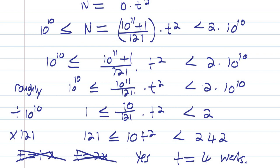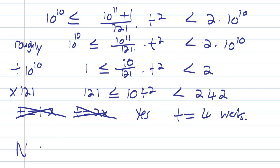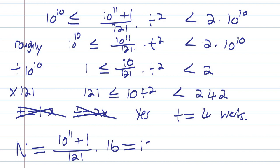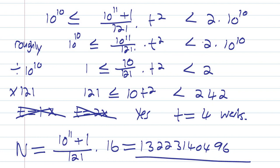With t equals 4, N equals (10 to the 11 plus 1 over 121) times 16, which equals 13,223,140,496. This is an 11-digit number starting with 1, and when written twice in a row it becomes a perfect square. That is the answer to the problem that stumped everybody.